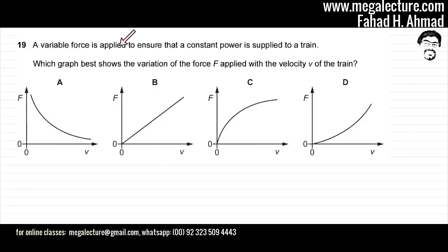The following question reads that a variable force is applied to ensure that a constant power is supplied to a train. Which graph best shows the variation of the force F applied with the velocity V of the train?